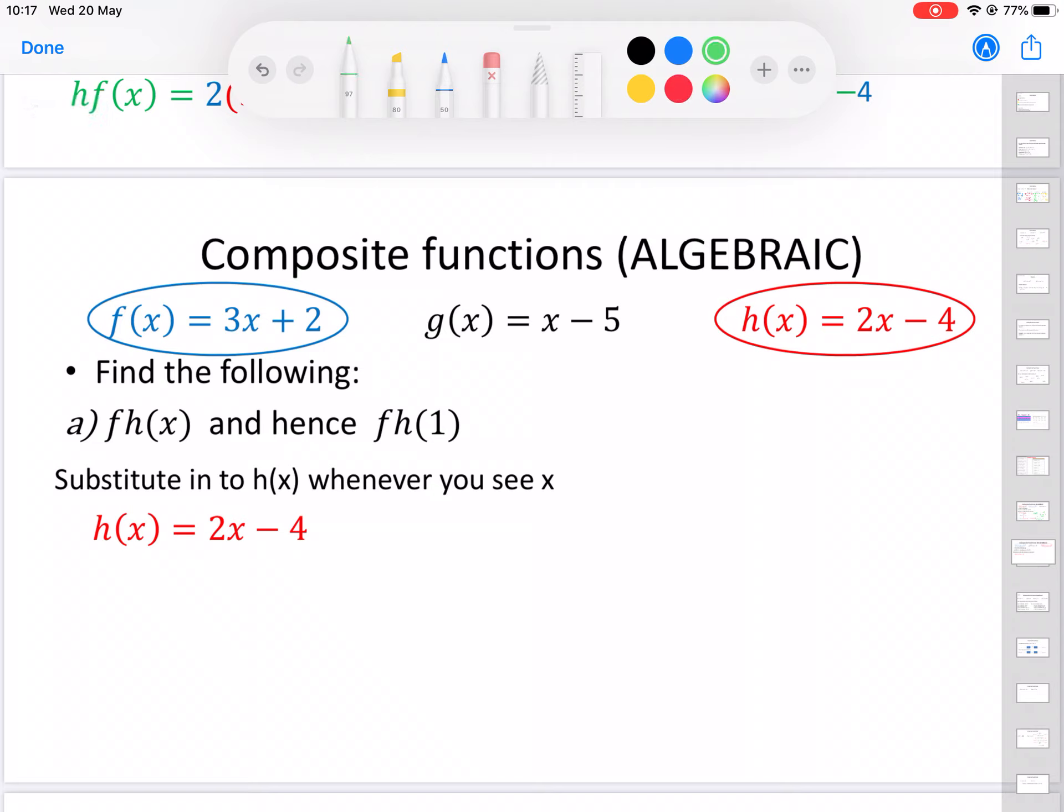Hopefully you've had a chance to go through that. So we're starting with the h function and we're going to put that into the f function. f(x) is 3x + 2. So this whole thing here is going to go in the place of that x. So fh(x) equals, well we've got the 3, then in the brackets we're going to have 2x - 4, because that's replacing that whole x value, don't forget. And then we're going to have that plus 2 on the end still.